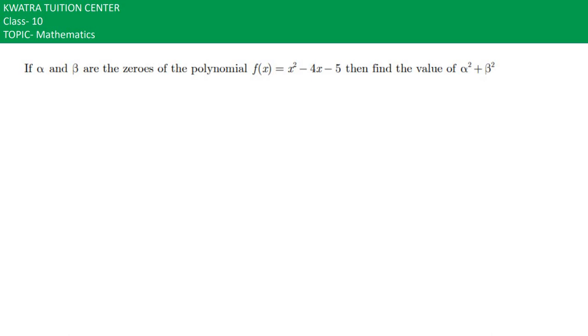We'll be starting with a new problem. It says if alpha and beta are the zeros of the polynomial f(x) = x² - 4x - 5, then we have to find alpha squared plus beta squared.